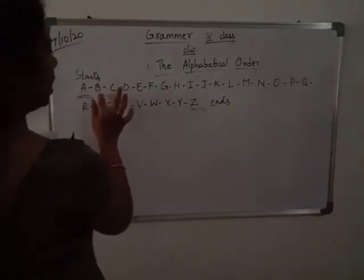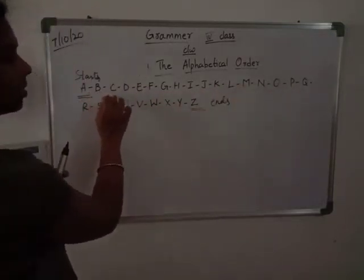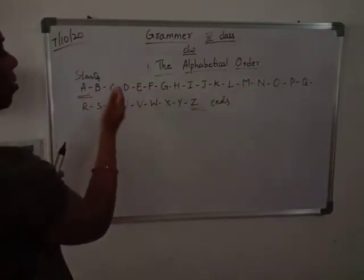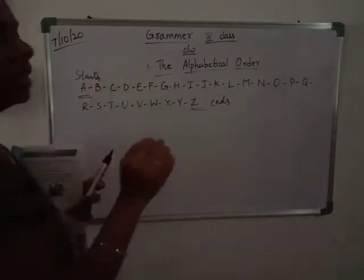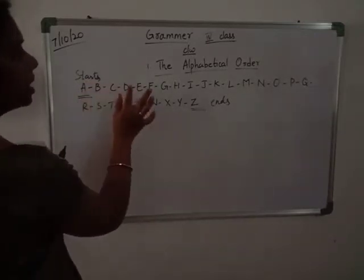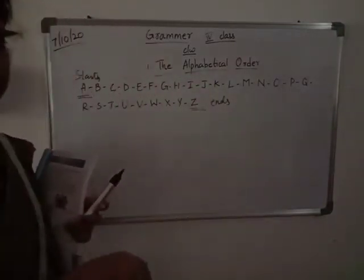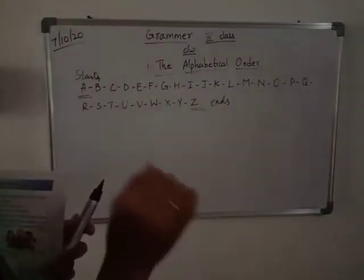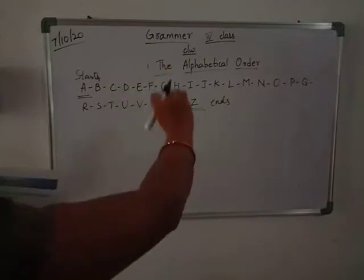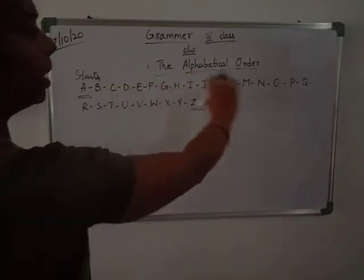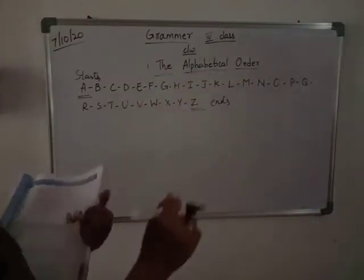This order — A, B, C, D — is the order. First A, then B, then C, then D, then E. So this order in which we follow is called alphabetical order.